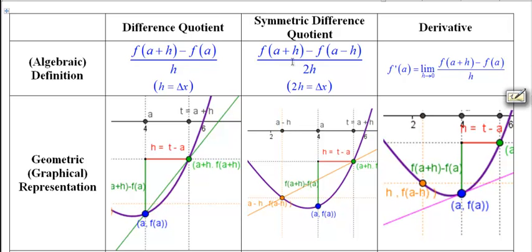Okay, the symmetric difference quotient is f of a plus h minus f of a minus h over 2h. This time 2h is the delta x, and the numerator then is delta f or delta y, the vertical change.